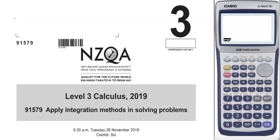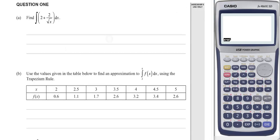This is the video of the worked solutions for the integration paper of 2019. I've got a fairly straightforward integration to start with. I'm going to rewrite this in index notation first because that's easier to work with. Then increase the power, divide by the new power, and we get x to the half. If we do 2 divided by a half, we get 4 plus c.